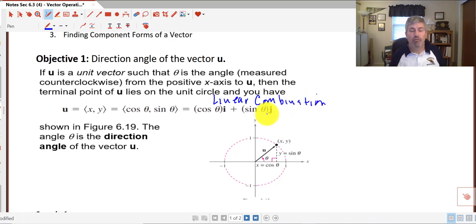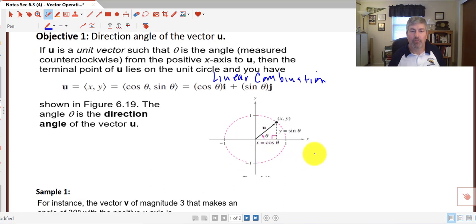If you saw unit vector and thought unit circle, well here we are. We have a unit vector imposed on the unit circle. So shown in the figure here, the angle theta is the direction angle of vector u as it lies on our unit circle.